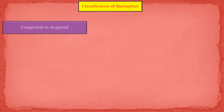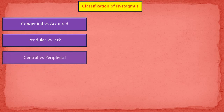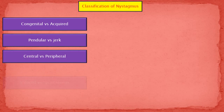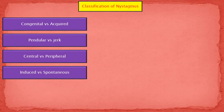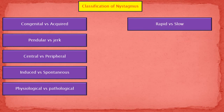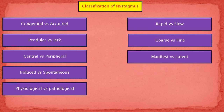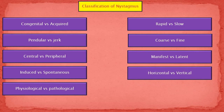Nystagmus is classified in multiple ways: congenital vs acquired nystagmus, pendular vs jerk nystagmus, central vs peripheral nystagmus, induced vs spontaneous nystagmus, and physiological vs pathological nystagmus. Further characterizations include rapid vs slow nystagmus, coarse vs fine nystagmus, manifest vs latent nystagmus, and horizontal vs vertical nystagmus.